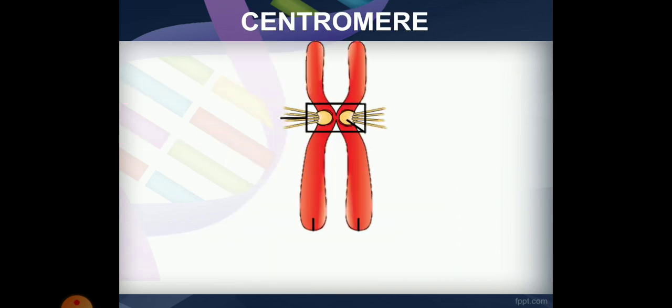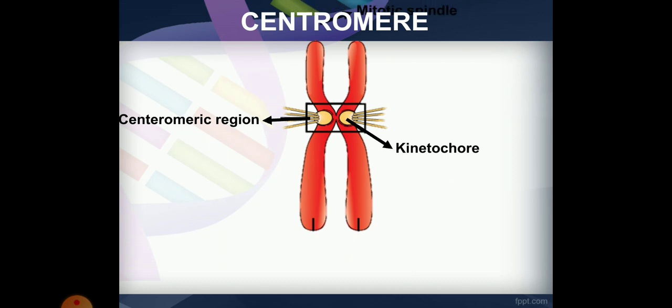This is a centromere. The centromere is a primary constriction on the chromosome. It is a protein complex, and there is a spindle fiber in this protein complex.